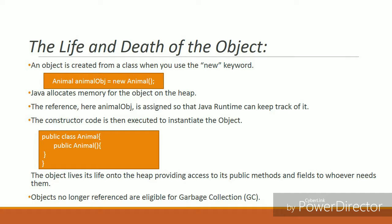Objects are created in Java using the new keyword. The Java virtual machine then allocates memory for that object on the heap and assigns it a reference so that it can be tracked. Here in the example, animal obj is the reference for the newly created object animal. The new keyword is followed by a call to the constructor. The job of the constructor is to instantiate the object, that is to initialize the member variables of the object. We will talk more on the constructors in our subsequent videos.